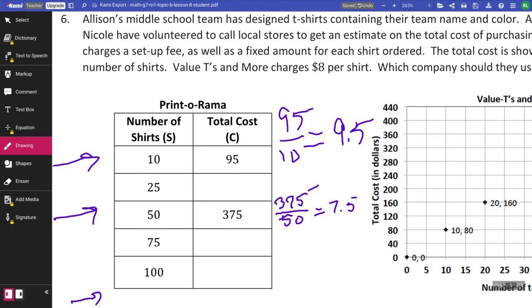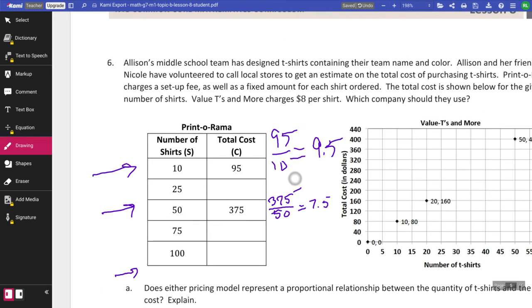375 divided by 50 comes out to 7.5. So we do not have a constant rate, which means that we are not going to be able to figure out. But if we know that this is 9.5 at 10 shirts and at 50 shirts, it's now 7.5. We can assume, because it's not telling us what the setup fee is for Print-O-Rama, we can assume that we have a better deal for value and T's and more.